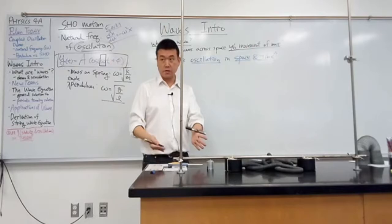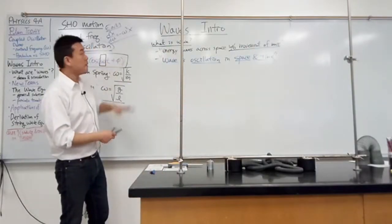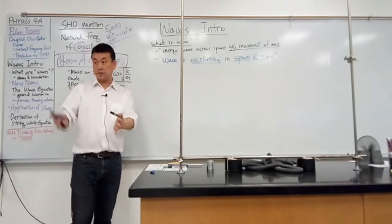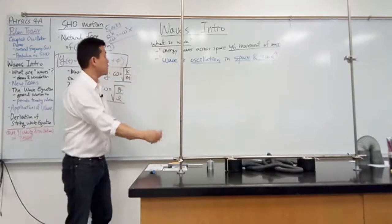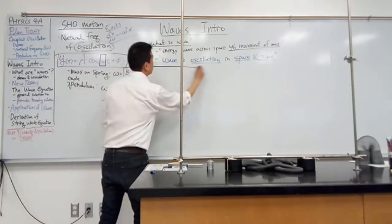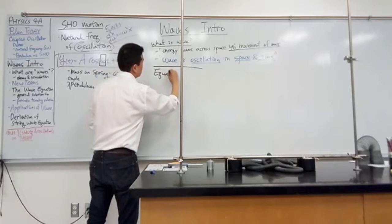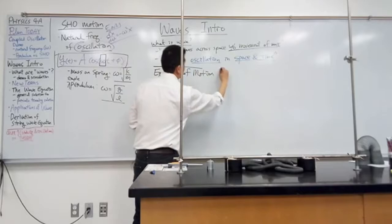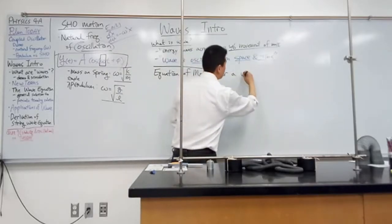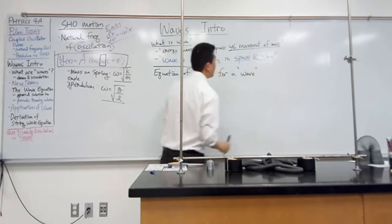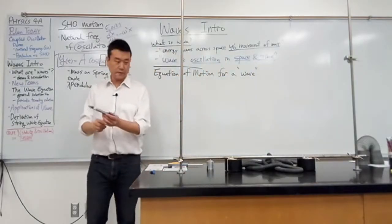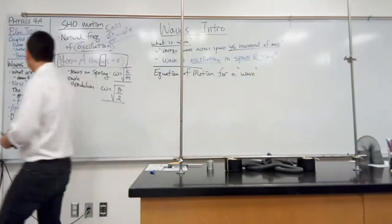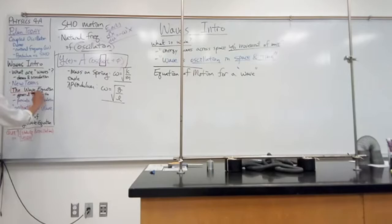With oscillations, we started off with the physical system and derived the equation. But because the wave is so general, what I want to do is instead of starting with the physical system, I'm going to give you the end point. So let me write down the equation of motion for something we can call a wave — or, the whole equation of motion for a wave. No one ever really says that; we call this the wave equation.